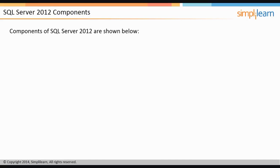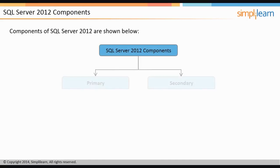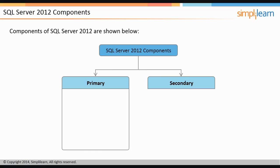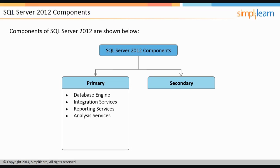Components in SQL Server can be categorized into two sets: primary and secondary. Primary components are fundamental services that the product offers and provide a certain set of unique capabilities. There are four such primary components in SQL Server: Database Engine, Integration Services, Reporting Services, and Analysis Services. We will discuss them in more detail in the next few screens.